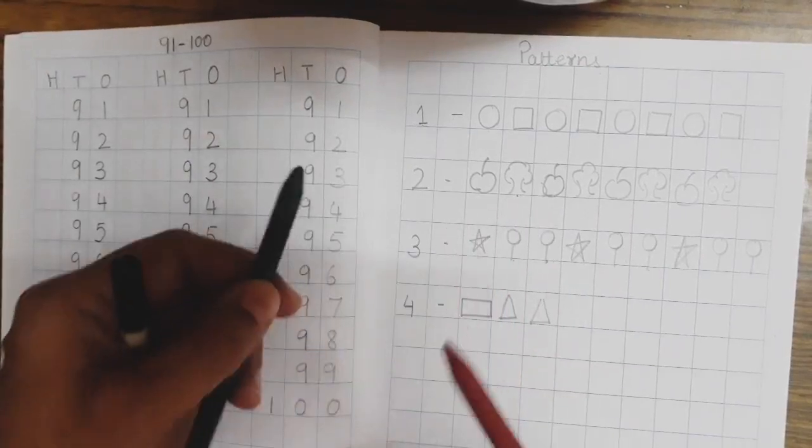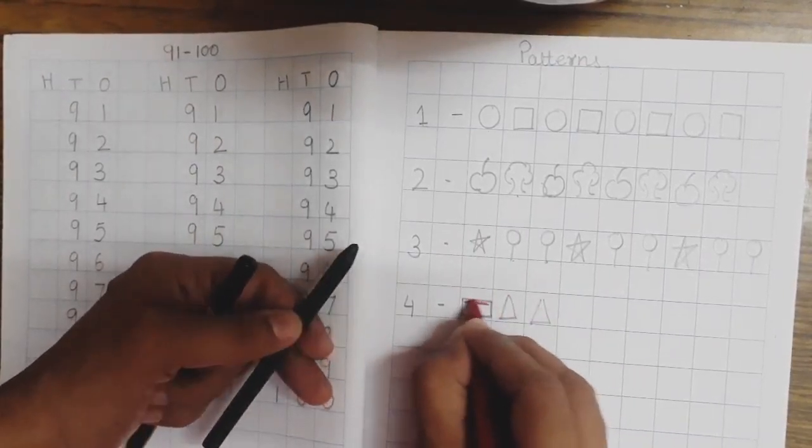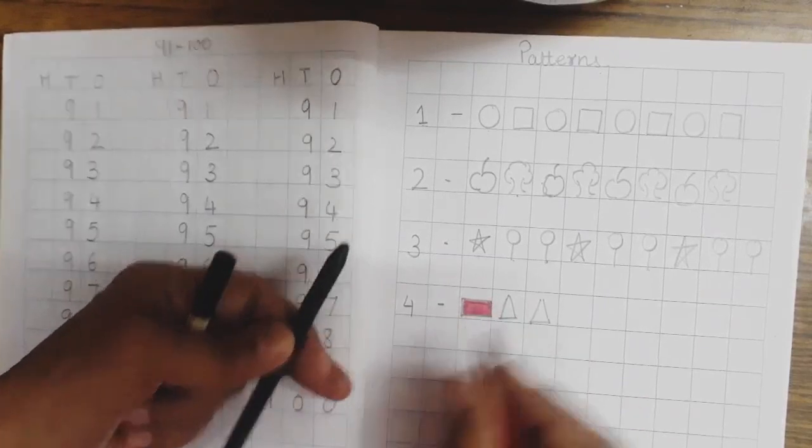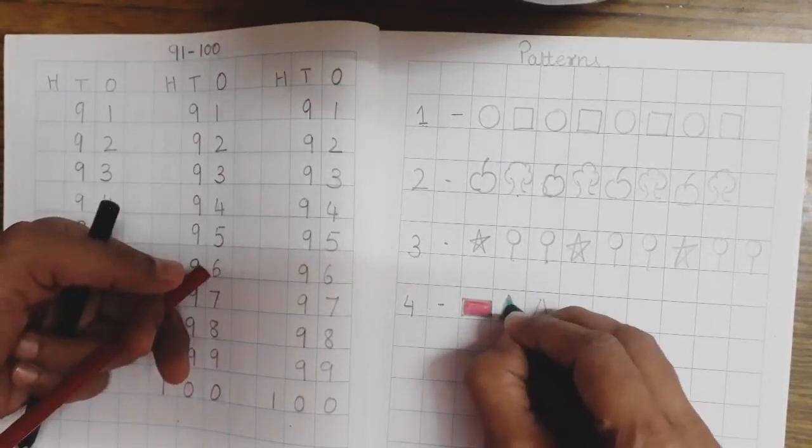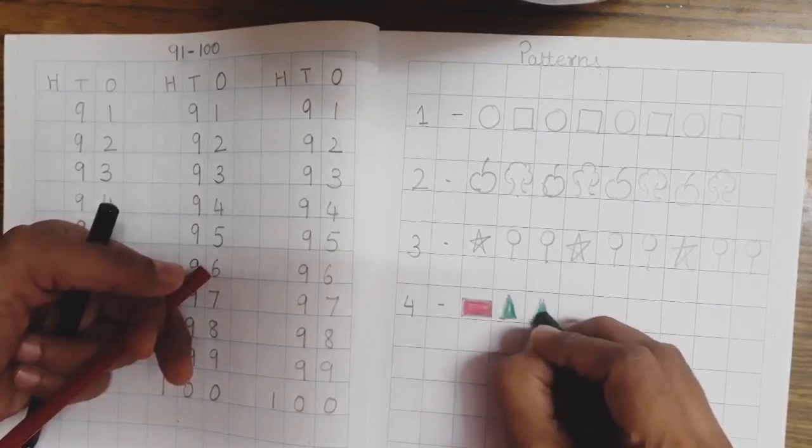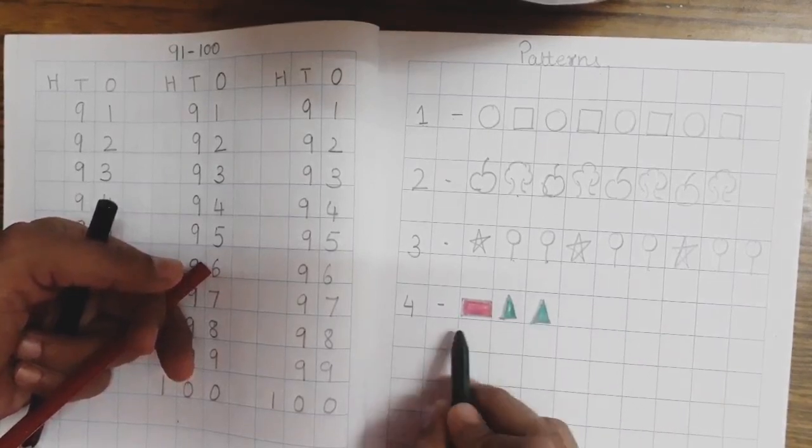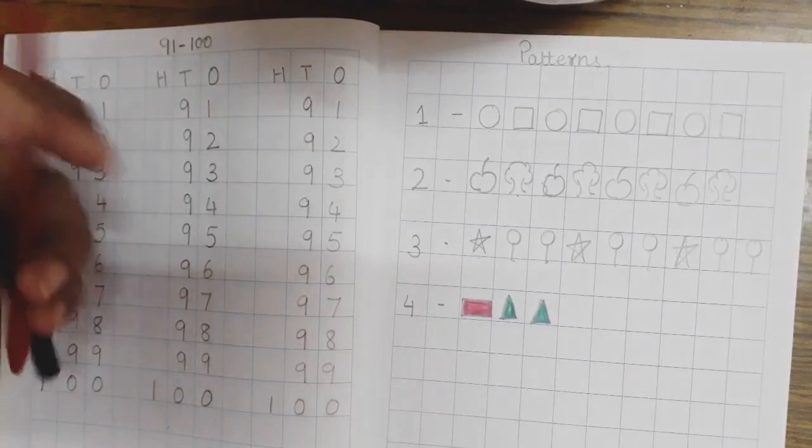Okay. Now, I am going to color rectangle with red. Yes. And triangle with green. Okay. So, now, we are going to draw red rectangle and 2 green triangles. Okay. So, now, after triangle, after triangles, what will come?